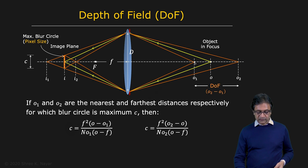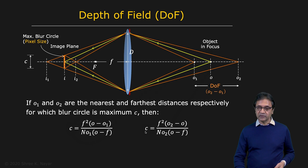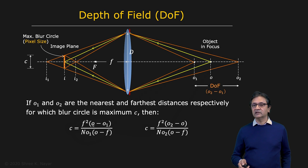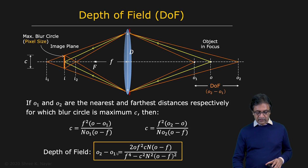We can find this out because we have an expression for the blur circle diameter. In that expression, instead of B, we plug in C — the size of the pixel. For the scenario where the object is in front, you get O minus O1; for the case where the object is further away than the plane of focus, you get O2 minus O, with the diameter set to C. We know the focal length, the F-number, C, and the distance of the plane of focus, so we can get an expression for the depth of field, which is O2 minus O1.